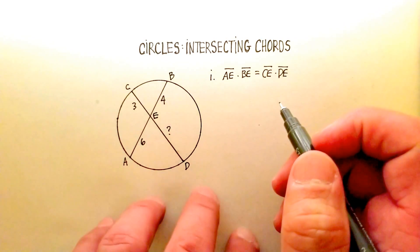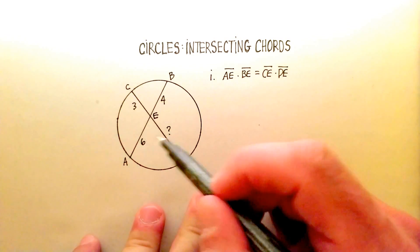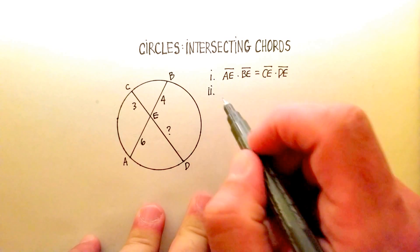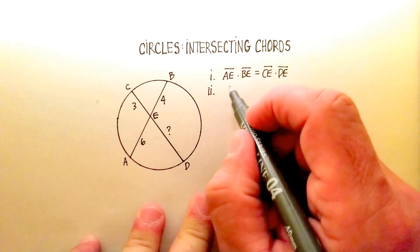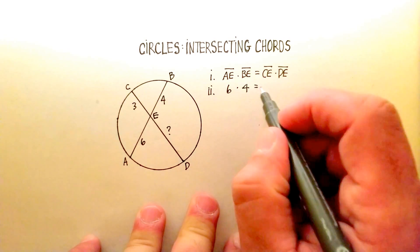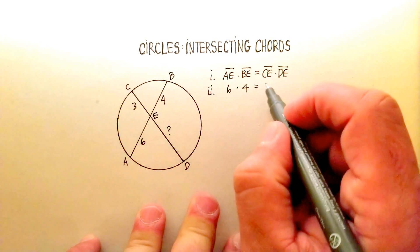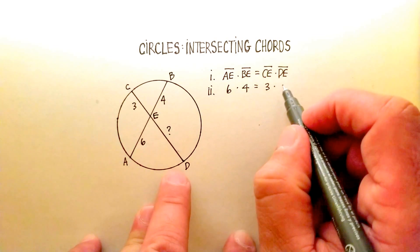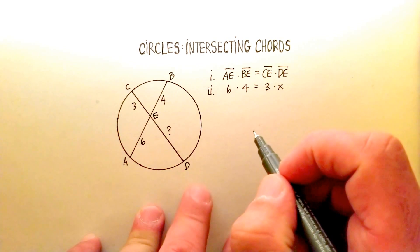Now, let's go ahead and substitute our numbers because we actually know three of the four unknowns. We know that AE is 6, BE is 4, CE is 3, and DE is what we're trying to find. Let's just call that X for now.